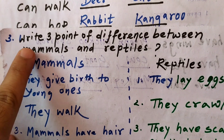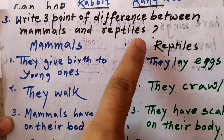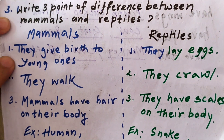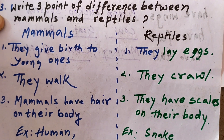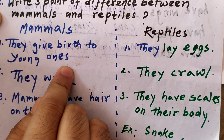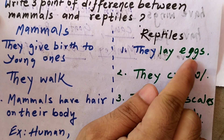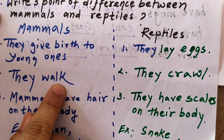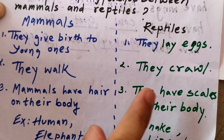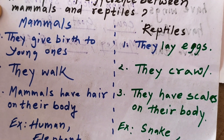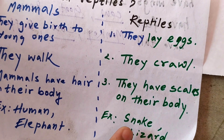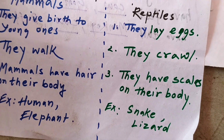Third question: write three points of difference between mammals and reptiles. Make two columns. Mammals: first, they give birth to young ones; second, they walk; third, mammals have hair on their body. Reptiles: first, they lay eggs; second, they crawl; third, reptiles have scales on their body. Examples — mammals: human, elephant; reptiles: snake and lizard.